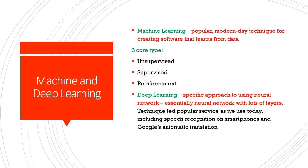Machine learning is a way of applying A.I. and is the popular modern-day technique for creating software that learns from data. There are three core types: unsupervised, supervised, and reinforcement. It incorporates a thing called deep learning, which is a specific approach to using neural networks — essentially a neural network with lots of layers. It is a technique that has led to the popular services we use today, including speech recognition on smartphones and Google's automatic translation.